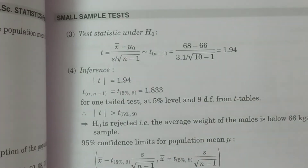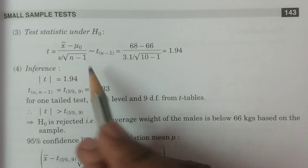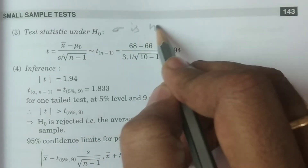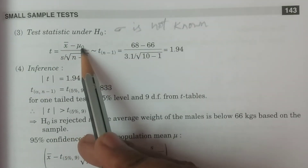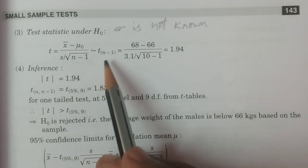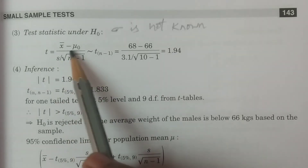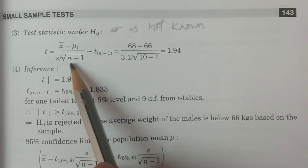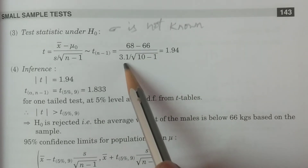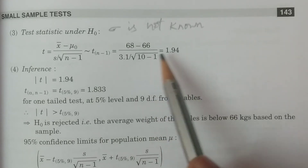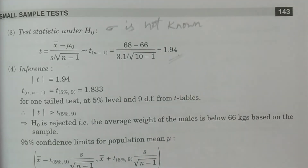Test statistic under H₀: since sigma is not known, we use t = (x̄ − mu₀) / (s / √(n−1)), which follows t with n−1 degrees of freedom. Substituting: x̄ = 68, mu₀ = 66, s = 3.1, √(10−1) = √9. The calculated t value is 1.94.